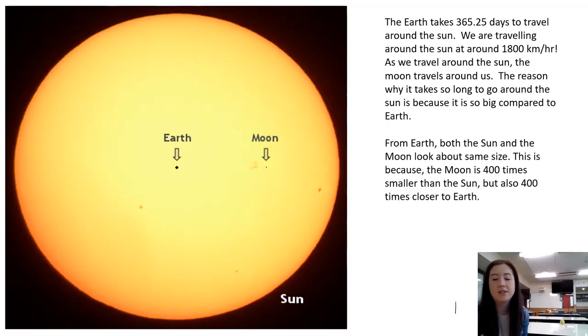The Earth takes 365.25 days to travel around the sun, which makes up a whole year. We travel around the sun at about 1,800 kilometers an hour. If you think about how fast we travel on a highway, which is about 110 kilometers an hour, that is really, really fast. Because it takes 365 and a quarter days to go around the sun, after four years all those quarters add up to make one whole day. So at the end of four years we have a leap year. In February we add an extra day on February the 29th.